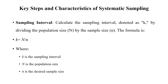For the sampling interval, we need to calculate it. Calculate the sampling interval, denoted as k, by dividing the population size N by the sample size n. The formula is: k (sampling interval) = total population / sample size, where k is the sampling interval, capital N is the population size, and small n is the desired sample size.